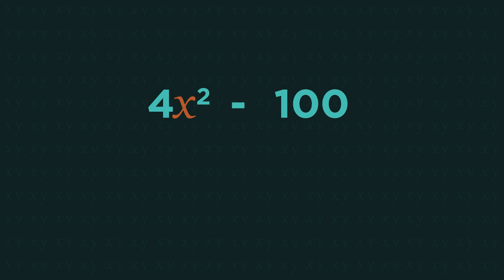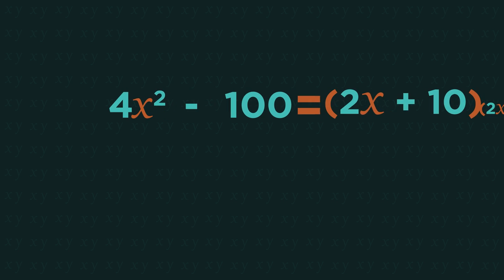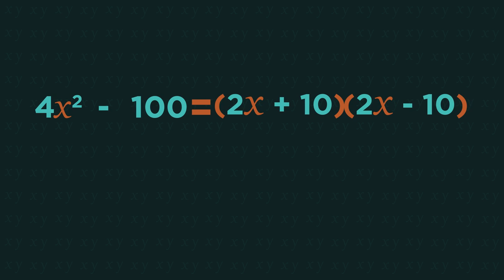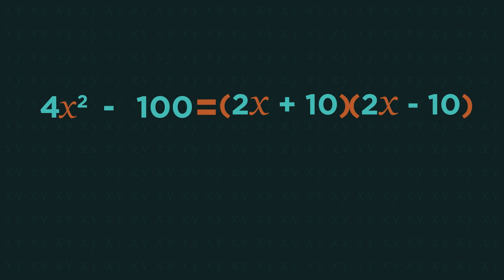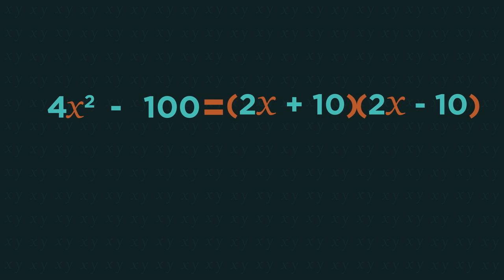So how do you think we factorize this one? 4 and 100 are both square numbers, so we do the exact same thing but instead of x we need to do 2x because the square root of 4 is 2. Simple.